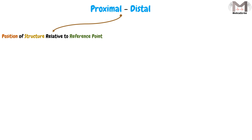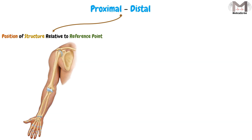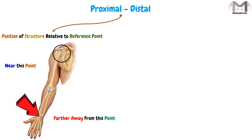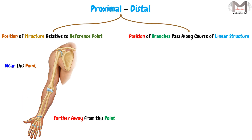These two terms — proximal and distal — have two uses. The first one is to describe the location or position of a structure relative to a reference point, meaning which structure is nearer to that point and which one is farther away from it. The second usage is to describe the position or location of branches that pass along the course of a linear structure.